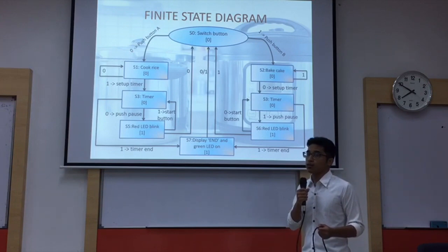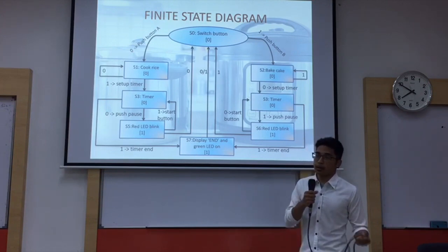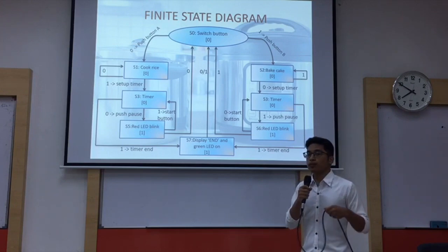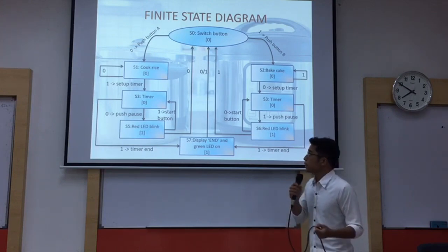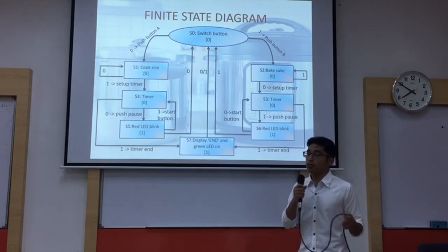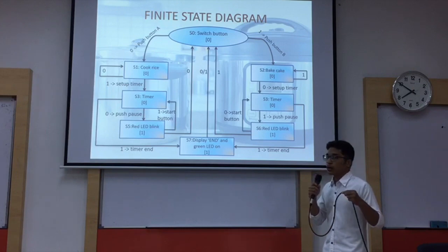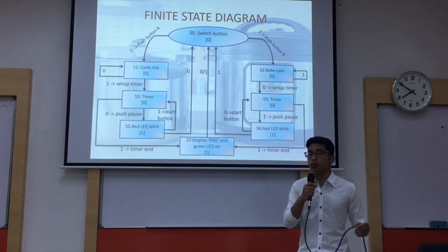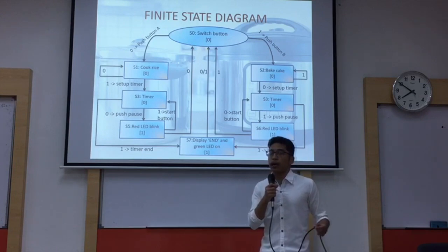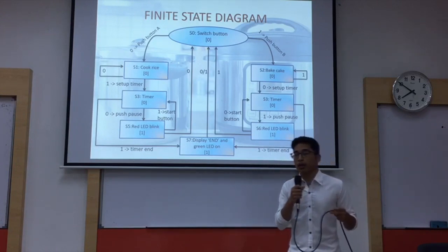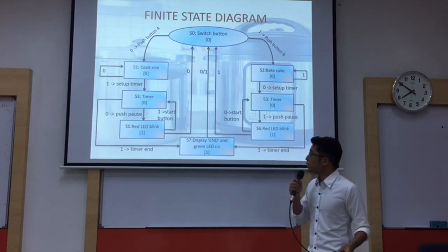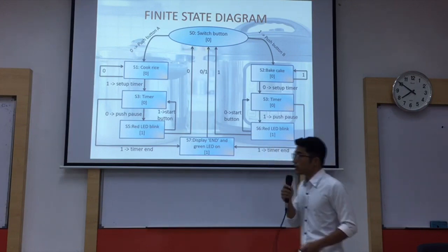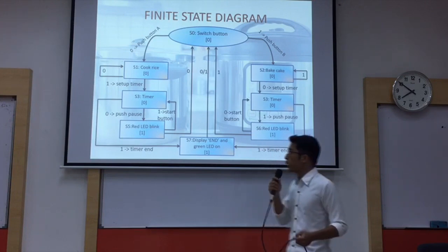You have the choice either not to set up the timer or to set up the timer. If you do not set up the timer, the input is zero, and the system will wait until you set any timer. If you want to start the cooking rice function, you set any timer and it will proceed to the cooking process. In the cooking process, you can choose either to wait for the timer to end or pause. If you push the pause button, the input will be zero, and the red LED will blink in the S5 state — S5 is an output, so it is one which is high.